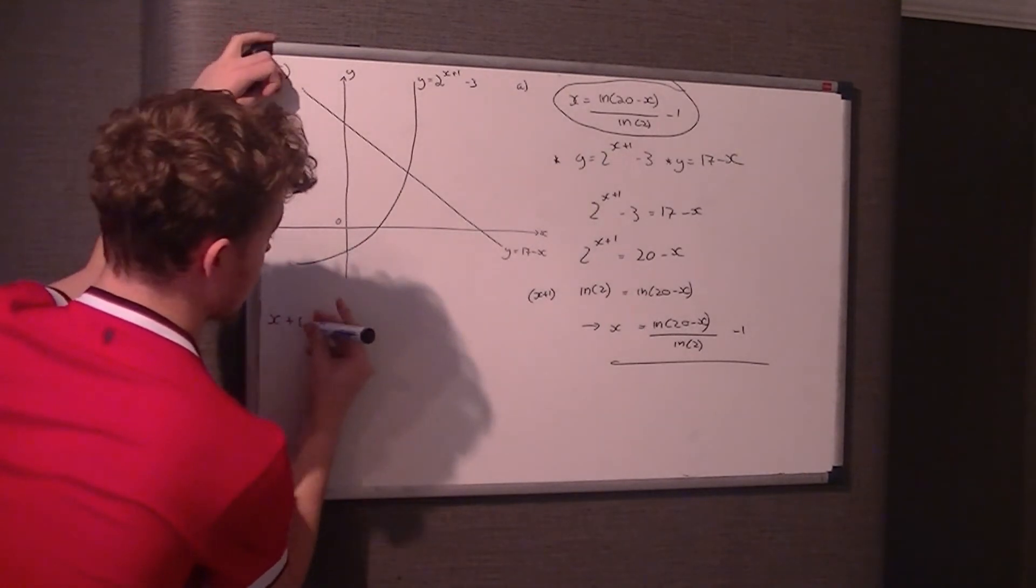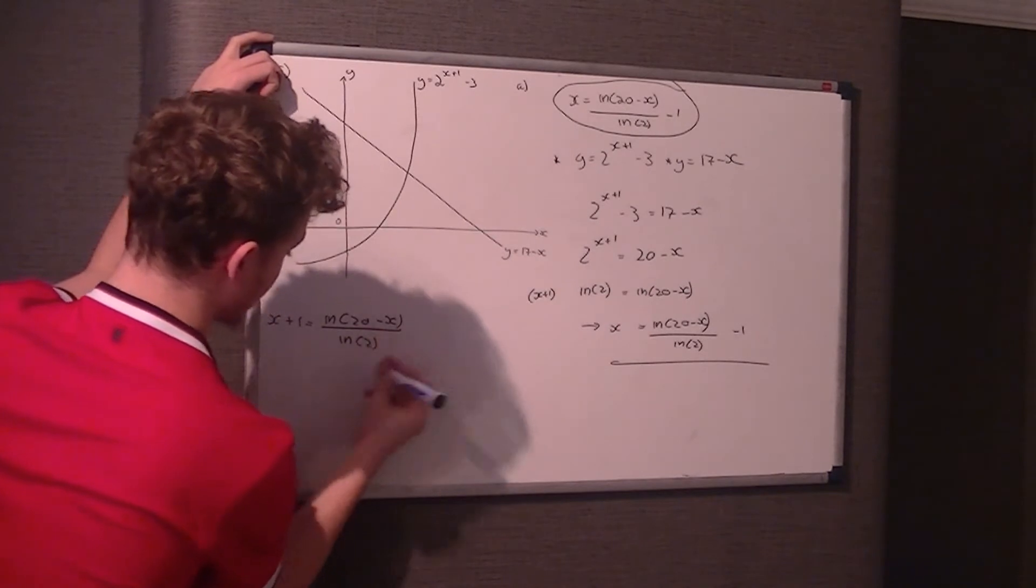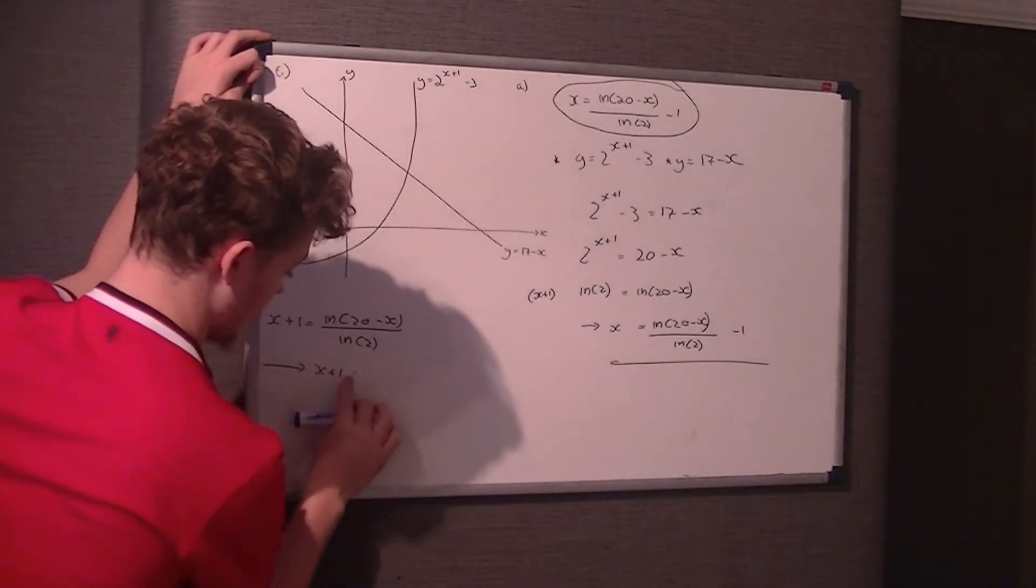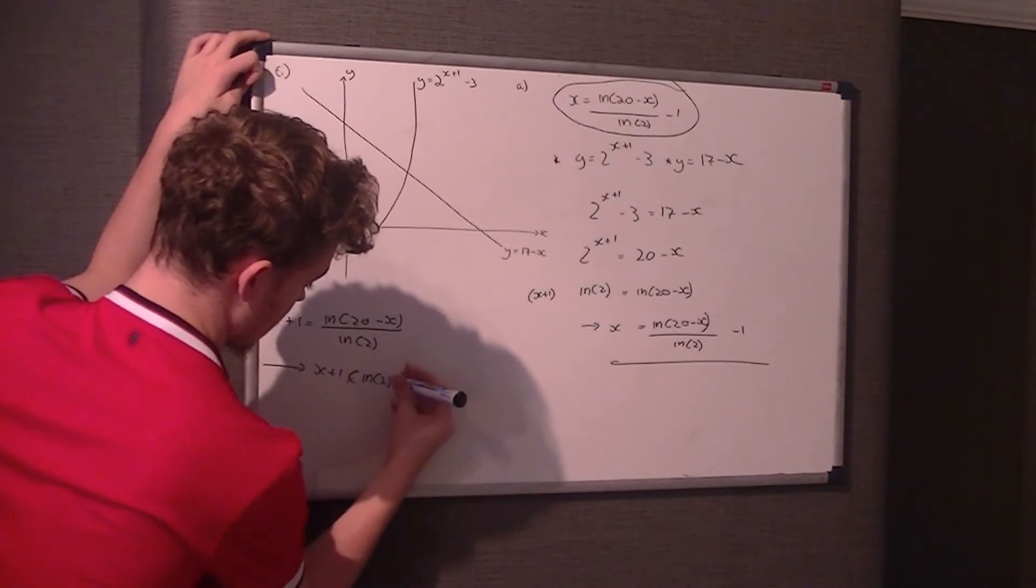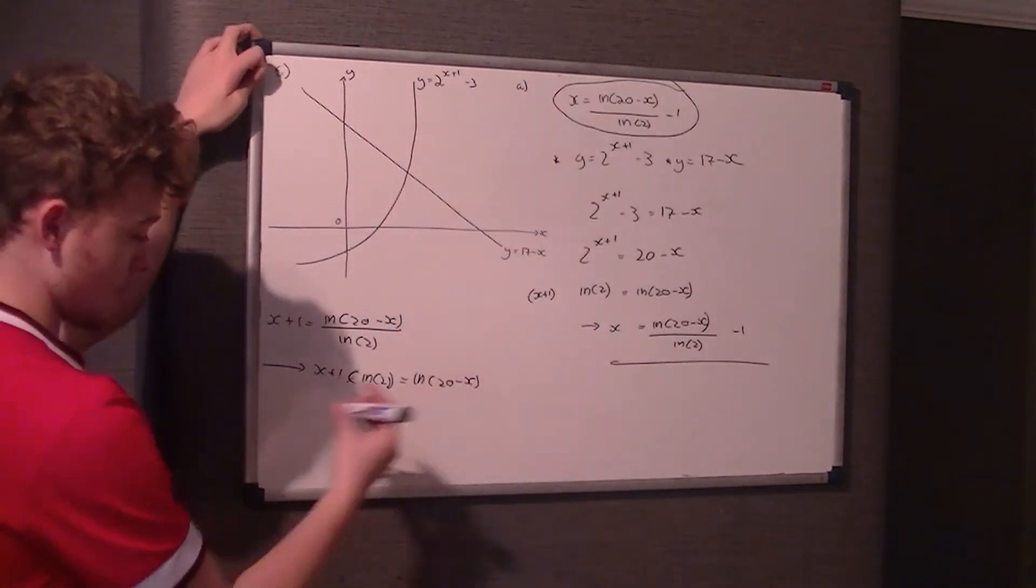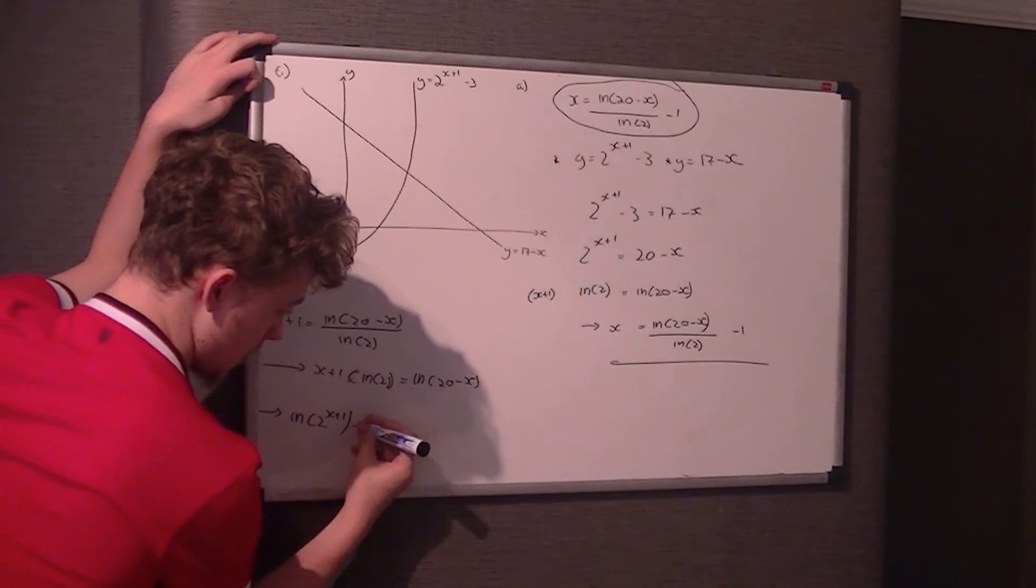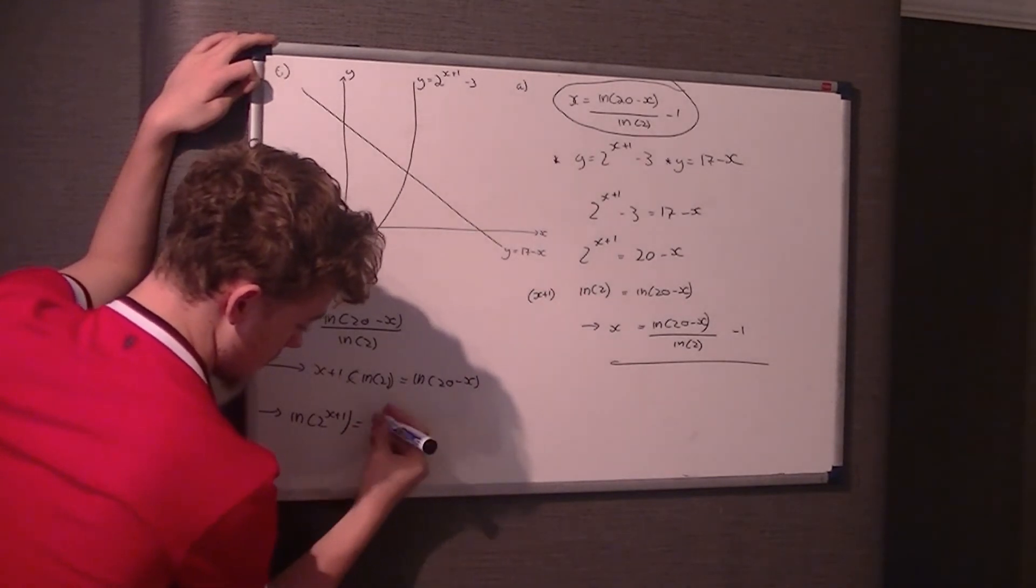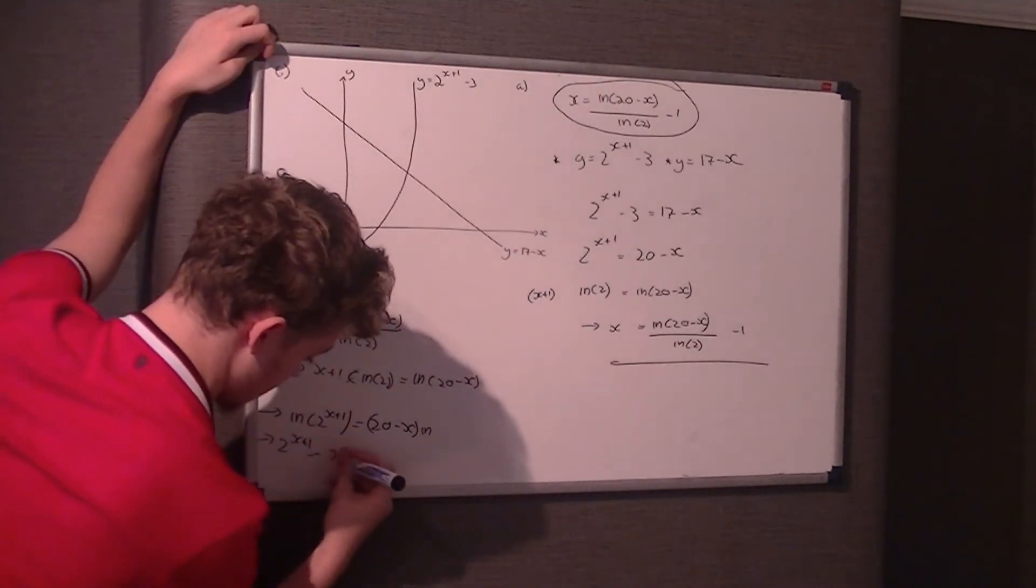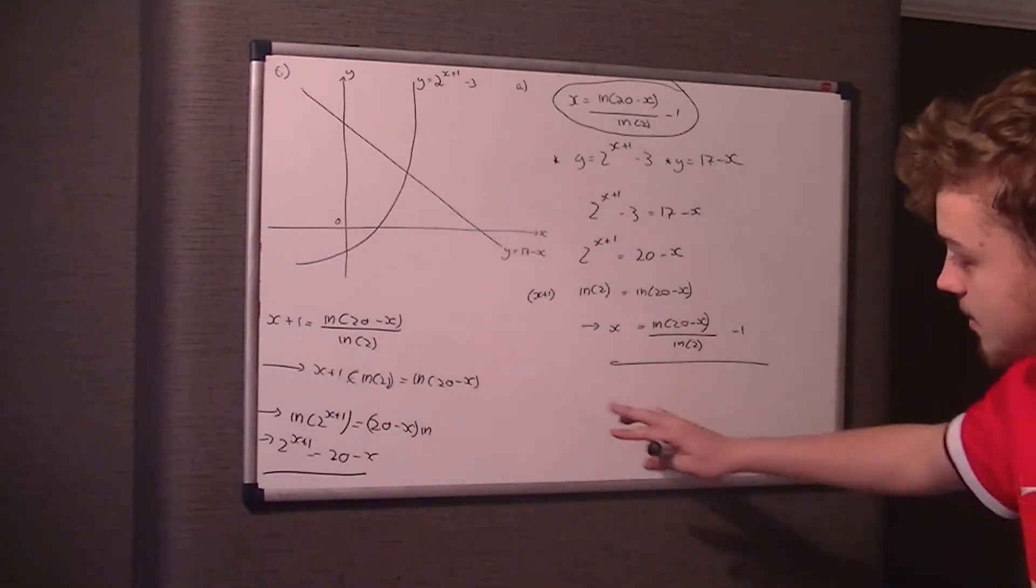So x plus 1 equals the LN of 20 minus x over the LN of 2. Times both sides by the LN of 2. So x plus 1 times the LN of 2 equals the LN of 20 minus x. Now, using your log rules, that's a power. So therefore, the LN of 2 to the power of x plus 1 equals the LN of 20 minus x. And then you can rearrange that to get what you started with. So even if you didn't see this, you could still work backwards, logically.